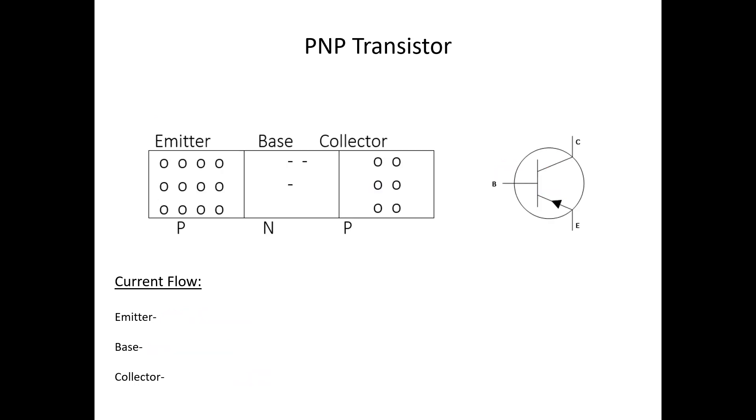The PNP transistor still consists of three terminals and two PN junctions. The primary difference is how each of these terminals are doped in semiconductor material. The emitter is still heavily doped, this time in P-type material, or holes.